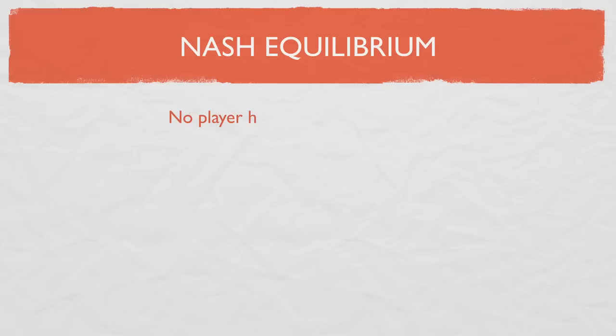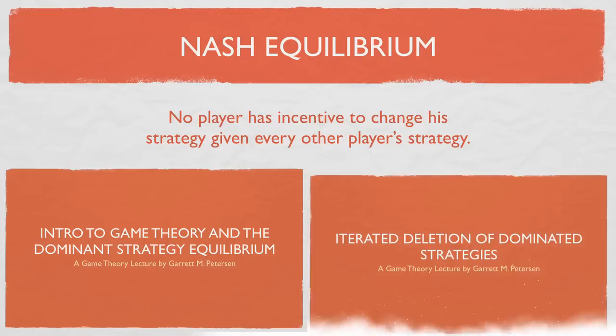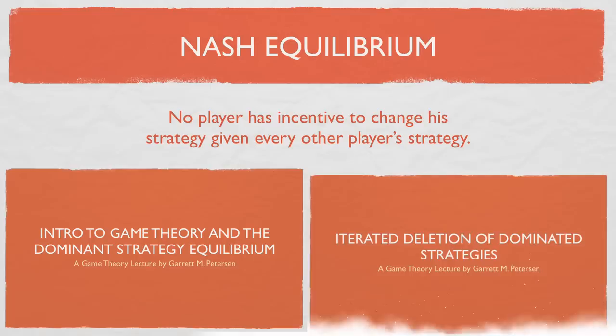a set of strategies are in Nash Equilibrium when no player has an incentive to change his strategy given every other player's strategy. The equilibrium concepts looked at in my previous videos, the dominant strategy equilibrium and equilibria found by deleting strictly dominated strategies, were both forms of Nash Equilibria.